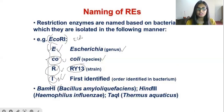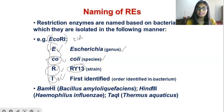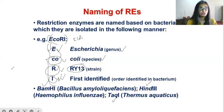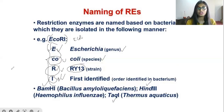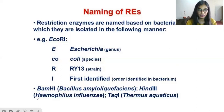Similar to EcoR1, some other restriction enzymes include HindIII, TaqI, and BamHI. Like this, different types of restriction enzymes are named based on the same manner.